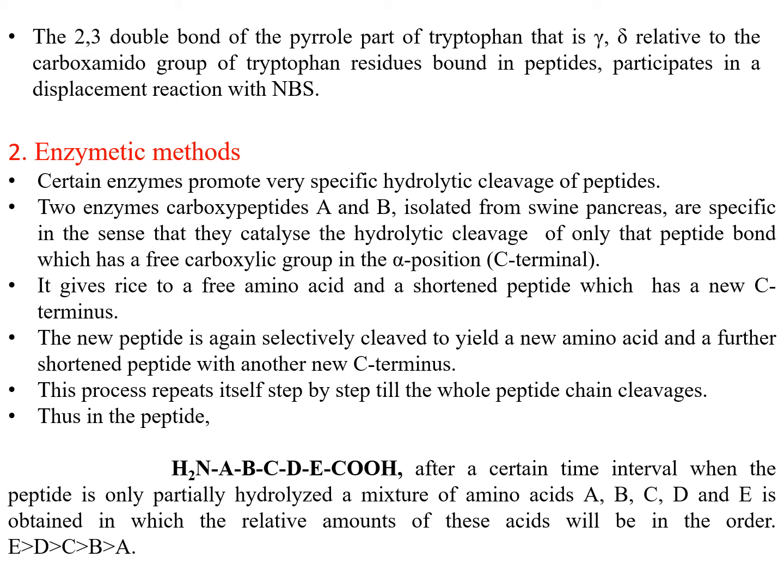In the enzymatic method of cleavage, certain enzymes promote very specific hydrolytic cleavage of peptides. They are used in very small amounts so that they do not interfere with the analysis of the polypeptide under investigation. Two enzymes, carboxypeptidases A and B, isolated from swine pancreas, are specific in that they catalyze the hydrolytic cleavage of only the peptide bond which has a free carboxylic group in the alpha position, that is, the C-terminal. This gives rise to a free amino acid and a shortened peptide with a new C-terminal.